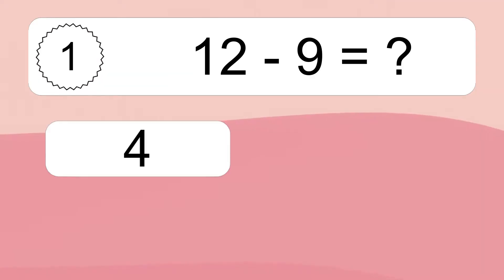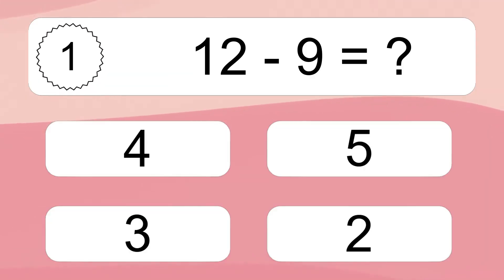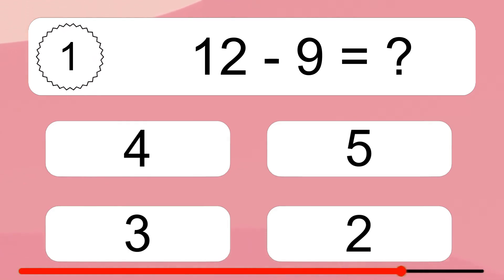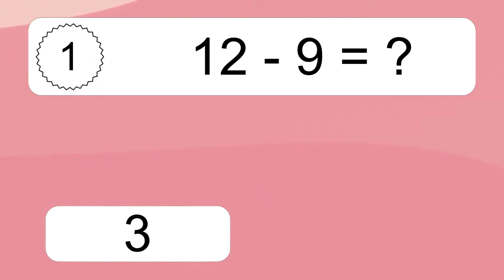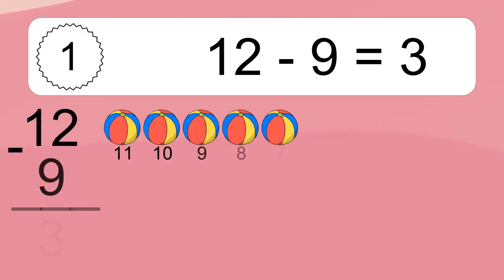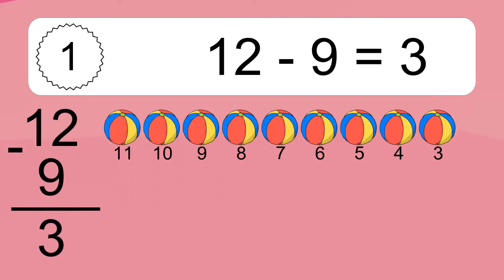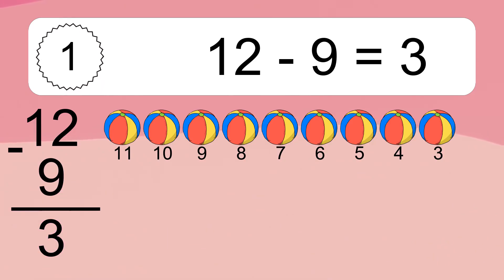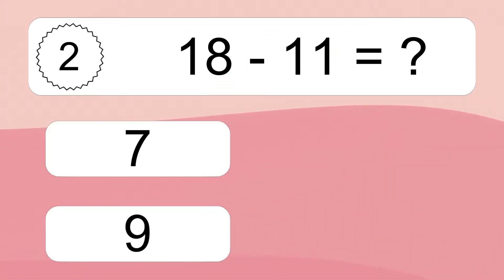12 minus 9 equals what? 12 minus 9 equals 3. Let's count it: 11, 10, 9, 8, 7, 6, 5, 4, 3.